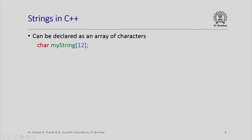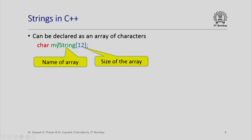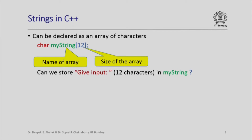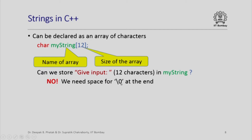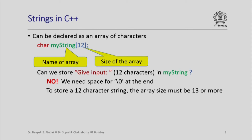Strings in C++ can be declared as an array of characters, where you specify the array name and its size, and each element of the array is of data type char. Suppose you want to store the string 'give input: ' (space) which has 12 characters — can you store it in an array of size 12? The answer is no, because every string must be terminated by a special end-of-string character, and there is no room for that. So to store a 12-character string, the array size must be 13 or more.